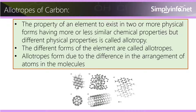The property of an element to exist in two or more physical forms having more or less similar chemical properties but different physical properties is called allotrophy. The different forms of the element are called allotrophs. Allotrophs form due to the difference in the arrangement of atoms in the molecules.